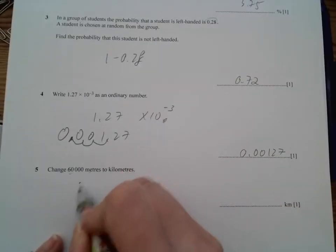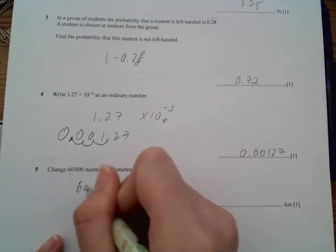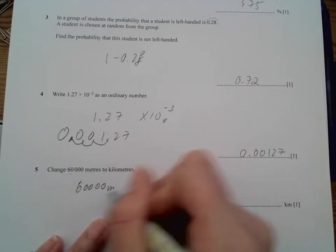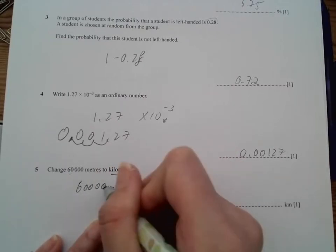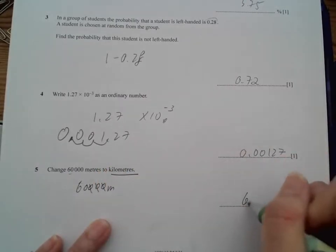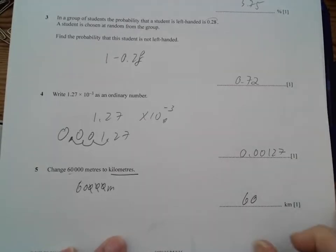And 6000 meters. All right. So to become kilometers, so we take three zeros out. 60. That was quite fast.